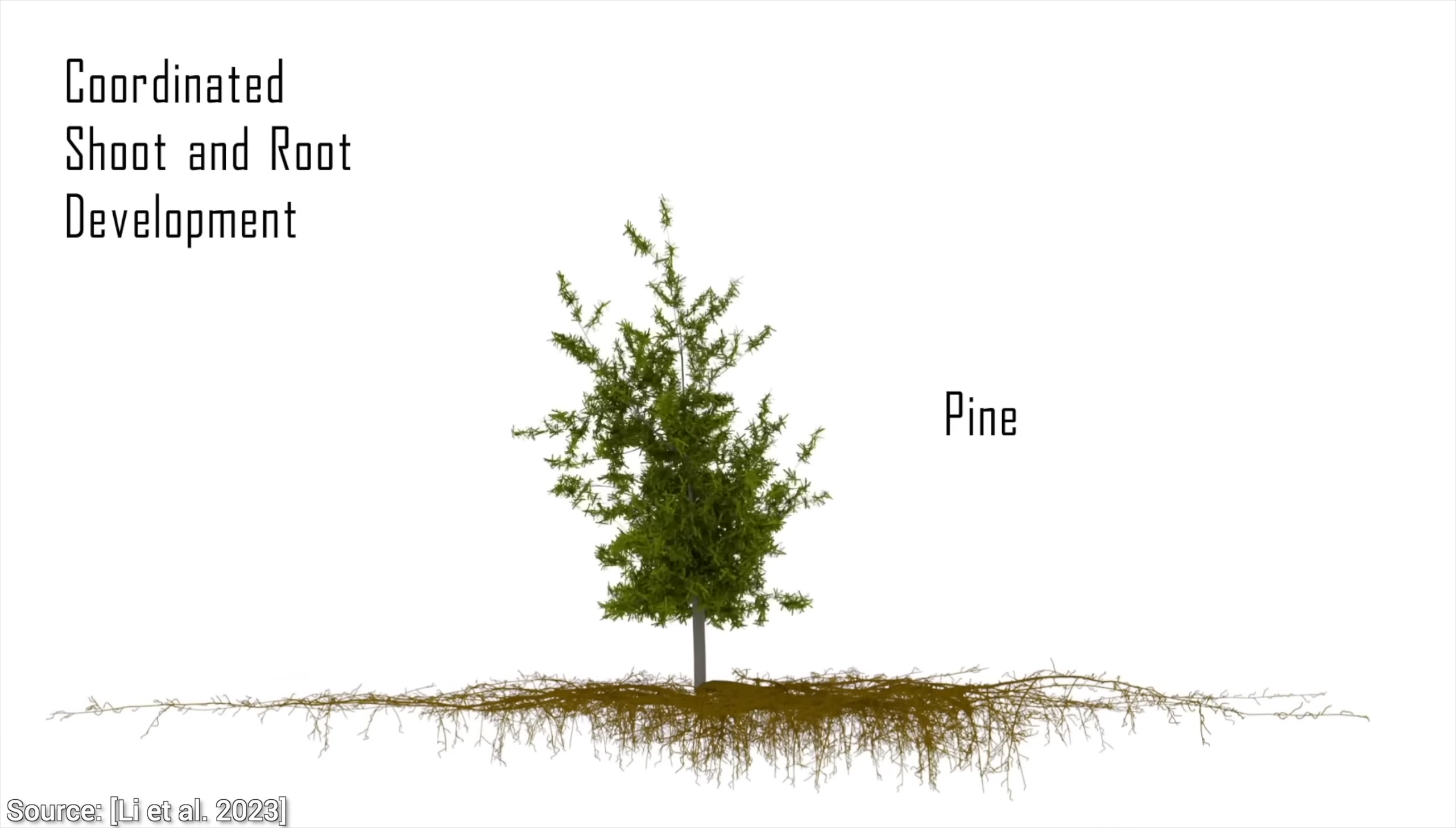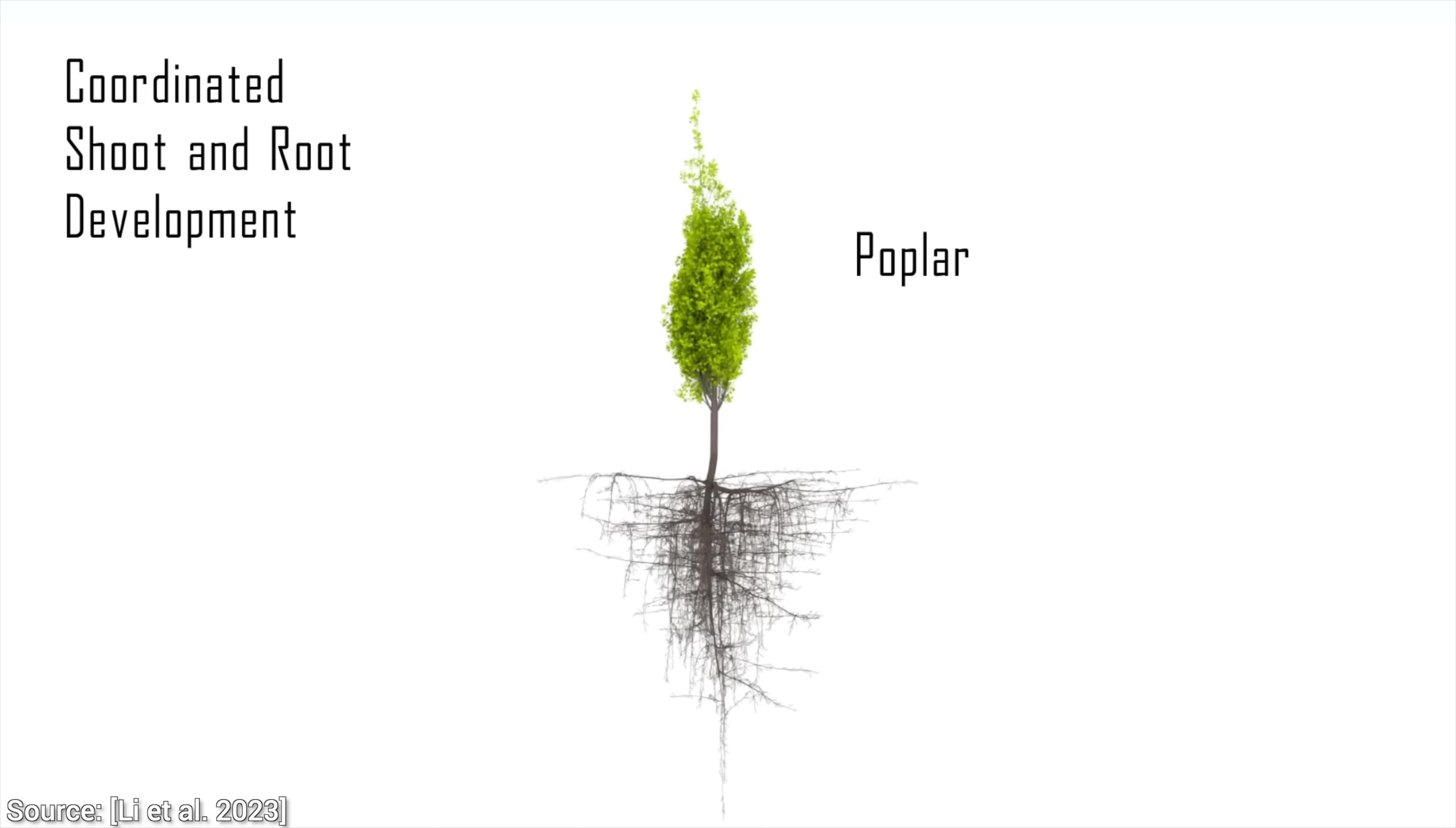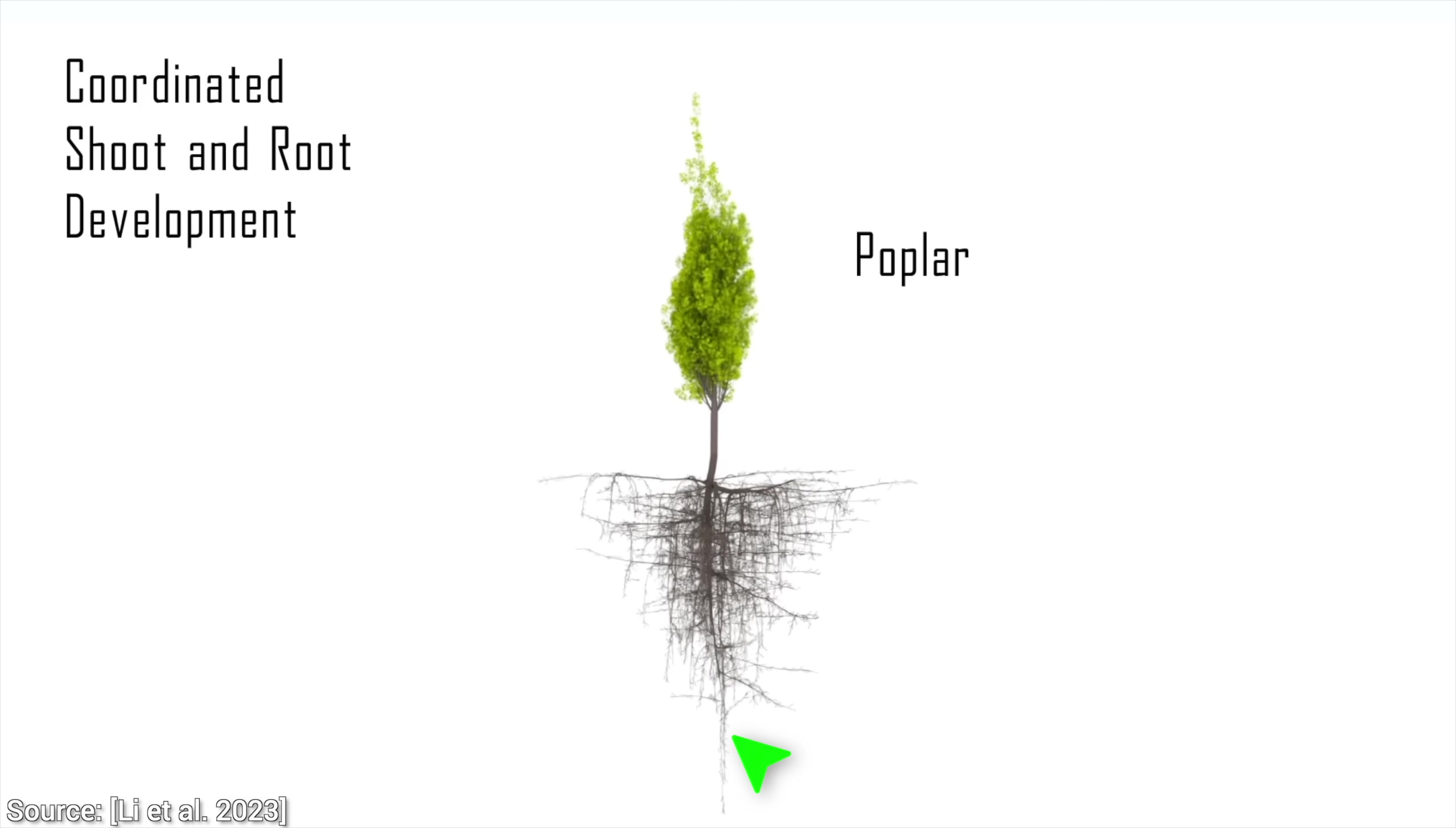Now, why does this happen? Well, poplar trees are rapid growing but relatively short-lived trees, and they primarily grow in areas where water is deeper down in the soil, and with these roots, they can reach them.